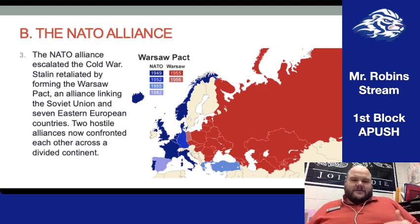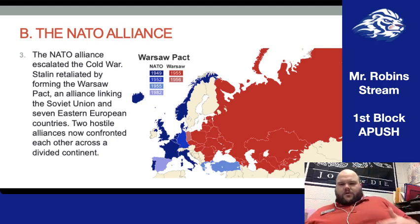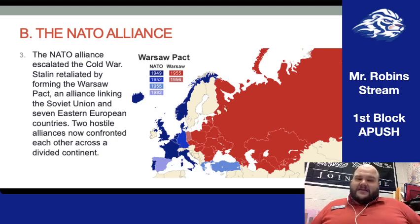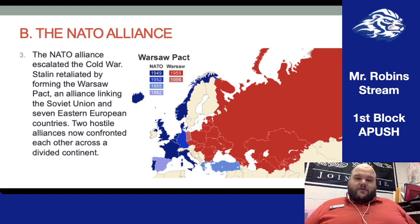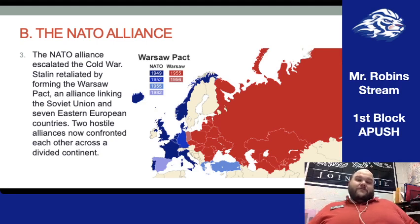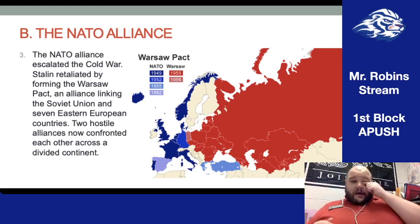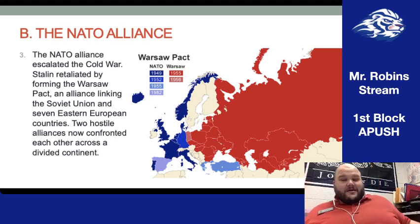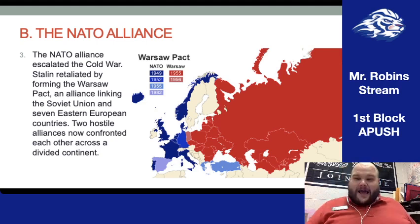Our action causes an equal and opposite reaction in the Soviet bloc. Just as we have our collective security alliance, the Soviet Union creates theirs with their satellite states in Eastern Europe — what they call the Warsaw Pact, connecting the Soviet Union with seven other European countries committing to defend each other in case of invasion. Now both sides have their guns pointed at each other, trying to either deter the other or prepare for the possibility.